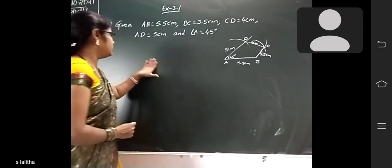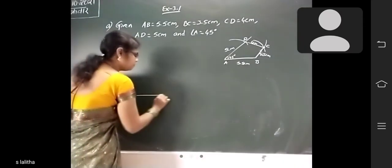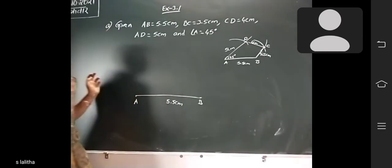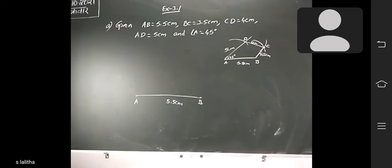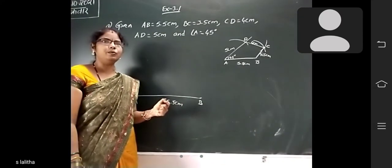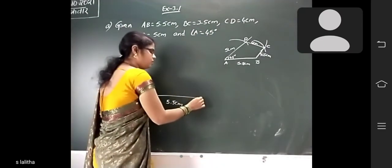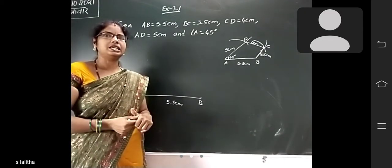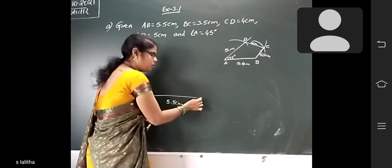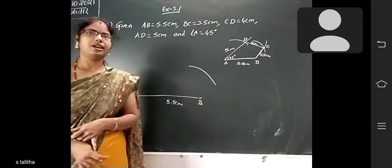Now you have to draw the actual quadrilateral. Take your scale — all of you take your scale — and draw AB = 5.5 cm. Draw a line segment of 5.5 cm. Now take your compass. Measure 3.5 cm on the scale, then keep the compass on B and draw an arc — 3.5 cm arc.